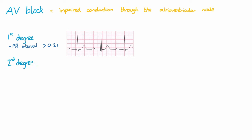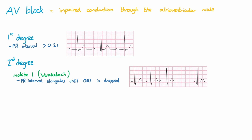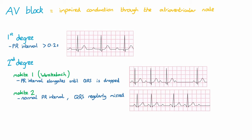Second degree AV block can have two types. The first is called Mobitz 1, or Wenckebach phenomenon, where the PR interval elongates with each successive complex until eventually a QRS is dropped. In this condition, the AV node is tiring with each conduction until eventually it fails to conduct, and then resets. Similar to first degree AV block, this is often an asymptomatic and benign condition. Mobitz type 2 also has QRS complexes missed, but with a constant PR interval — there will still be P waves at regular intervals. This is a result of the His-Purkinje system not conducting as it should.